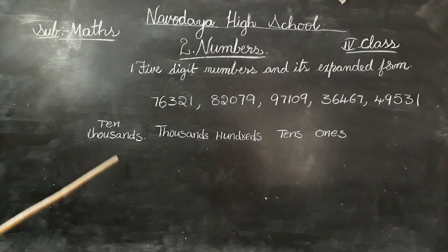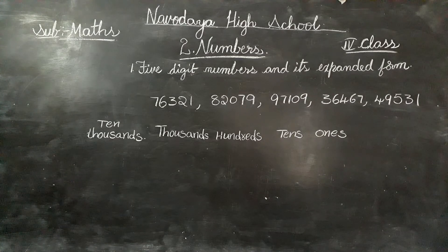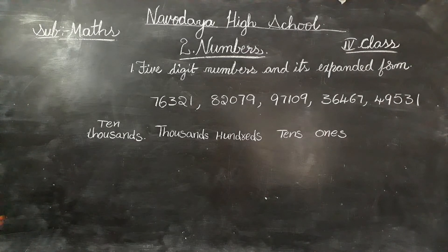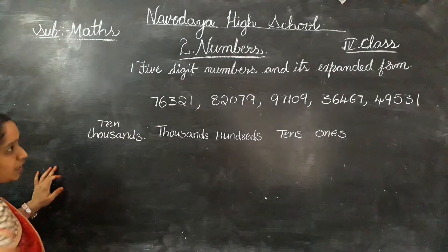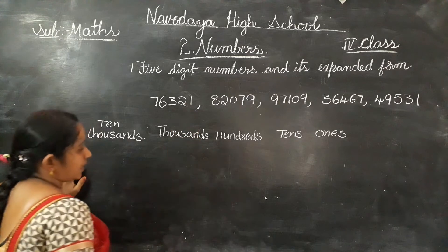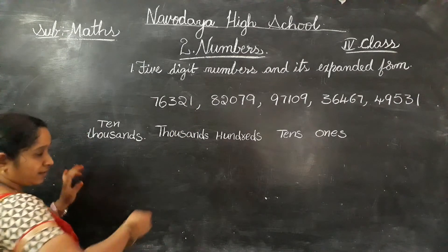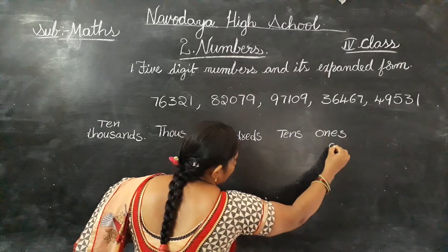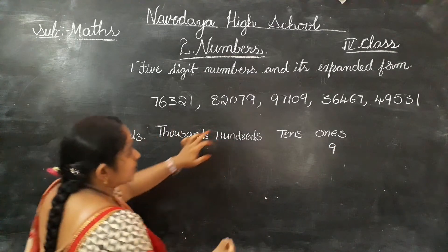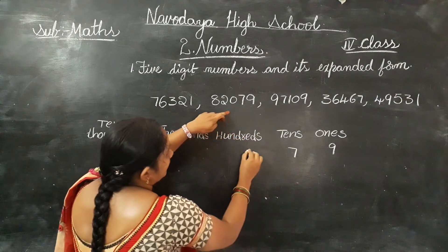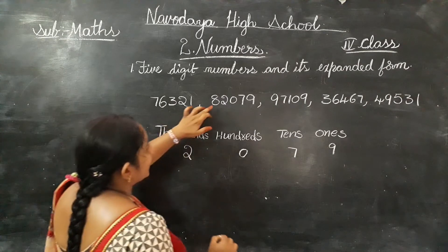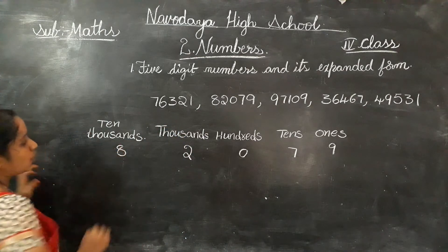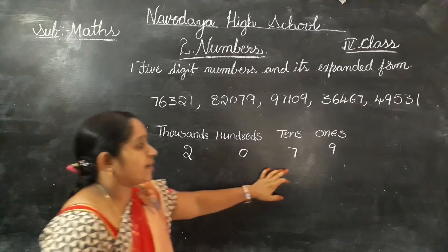Now let us see the place value chart for a five digit number. Five digit numbers have five place values: ones, tens, hundreds, thousands, ten thousands. Take the number eighty-two thousand and seventy-nine. Starting from the ones place: ones place is nine, tens place is seven, hundreds place is zero, thousands place is two, ten thousands place is eight.